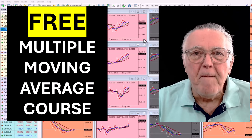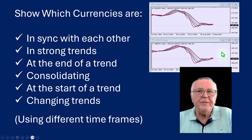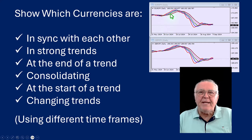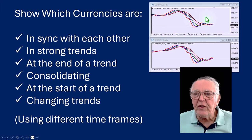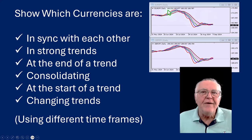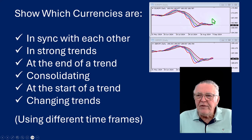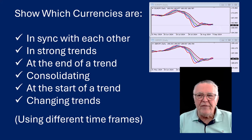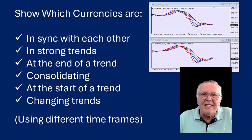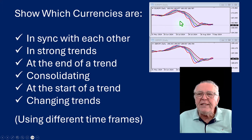So let's have a look at these multiple moving averages. How the multiple moving averages work is we set up a chart. Here's an example of a chart, and on this particular chart there are five moving averages. You see them and they are just slightly offset by each other, and that gives us a lot of information.